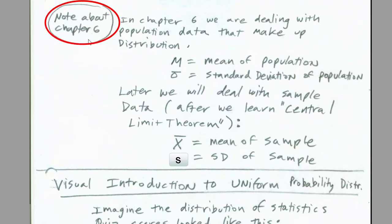Now, an important note about chapter 6. In chapter 6, we'll be dealing with population data that make up the distribution. And so μ and σ, mean of the population, standard deviation of the population. Later, after we learn the central limit theorem, then we'll talk about x̄, that's the mean of the sample, and s, that's the standard deviation of the sample.